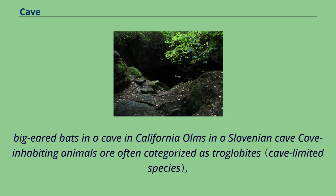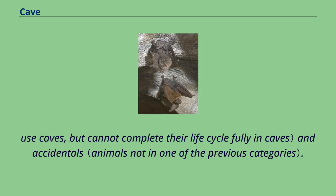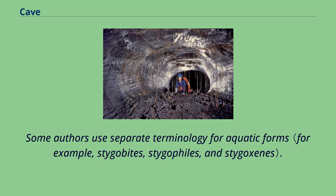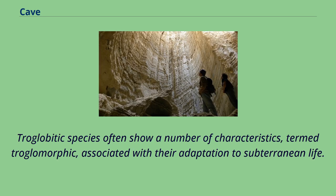Big-eared bats in a cave in California. Olms in a Slovenian cave. Cave-inhabiting animals are often categorized as troglobites, troglophiles, trogloxenes — species that use caves but cannot complete their life cycle fully in caves — and accidentals. Some authors use separate terminology for aquatic forms. Of these animals, the troglobites are perhaps the most unusual organisms. Troglobitic species often show a number of characteristics, termed troglomorphic, associated with their adaptation to subterranean life.